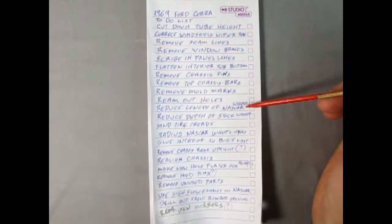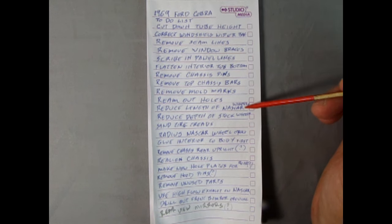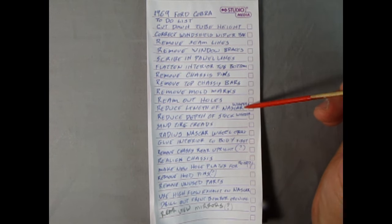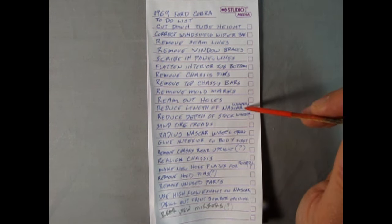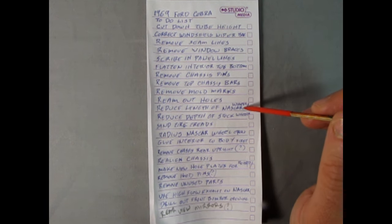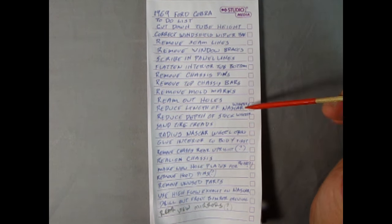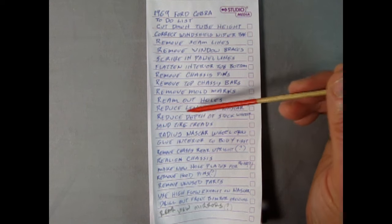Reduce the length of the NASCAR wheels. So this is those little pegs. Because remember, they're not really NASCAR wheels on here. What they are is the modified track race car wheels that are going to stick out of the car. So we want to bring those back in under the fenders. Reduce the depth of the stock wheels. So this is on the chrome ones to get that height down so that they actually fit in the tires properly. Sand the tire treads.